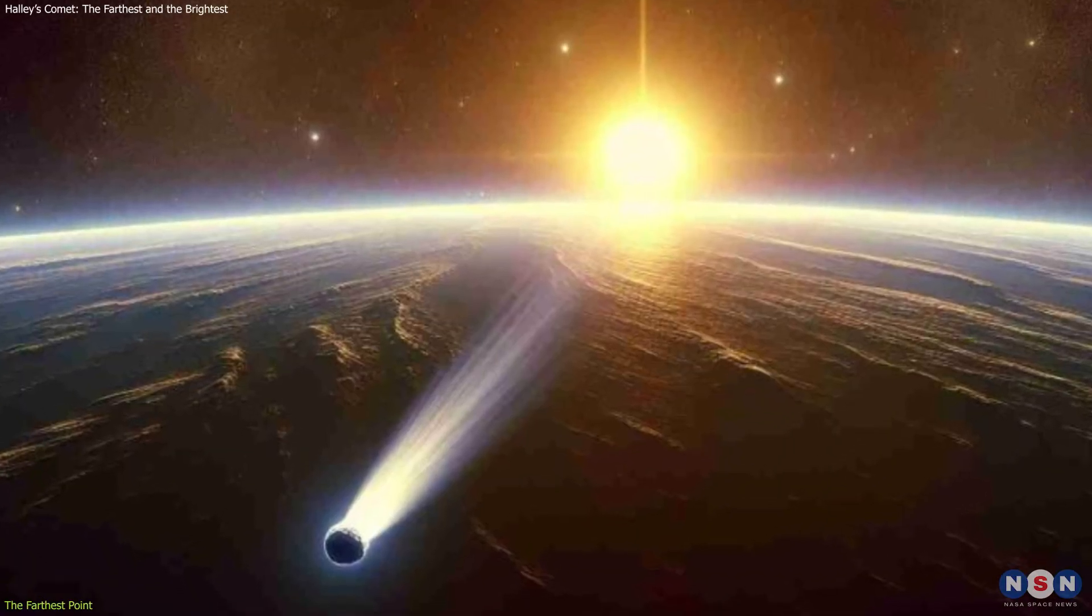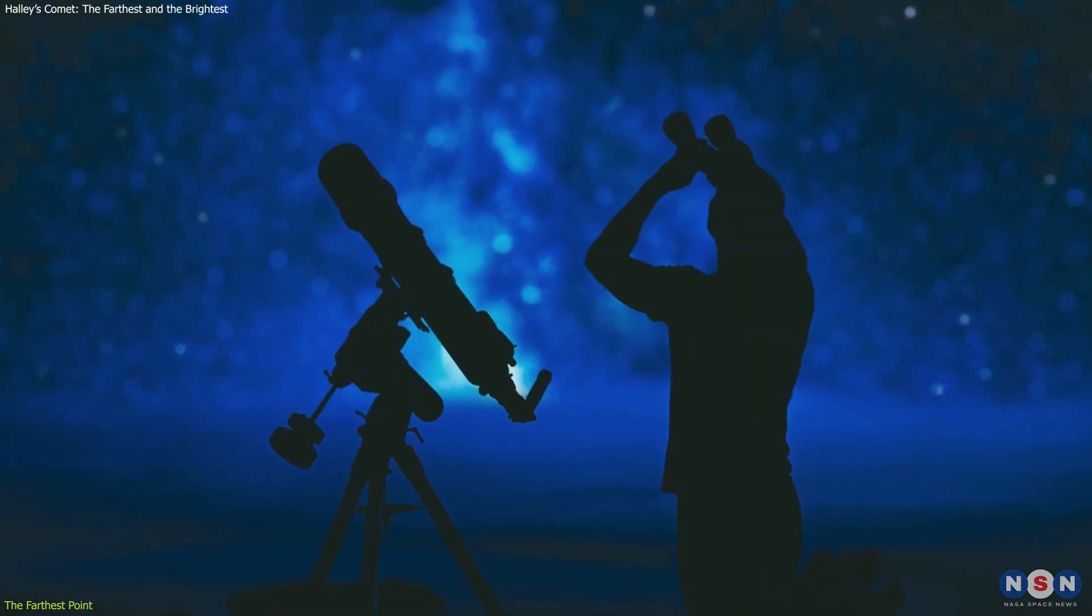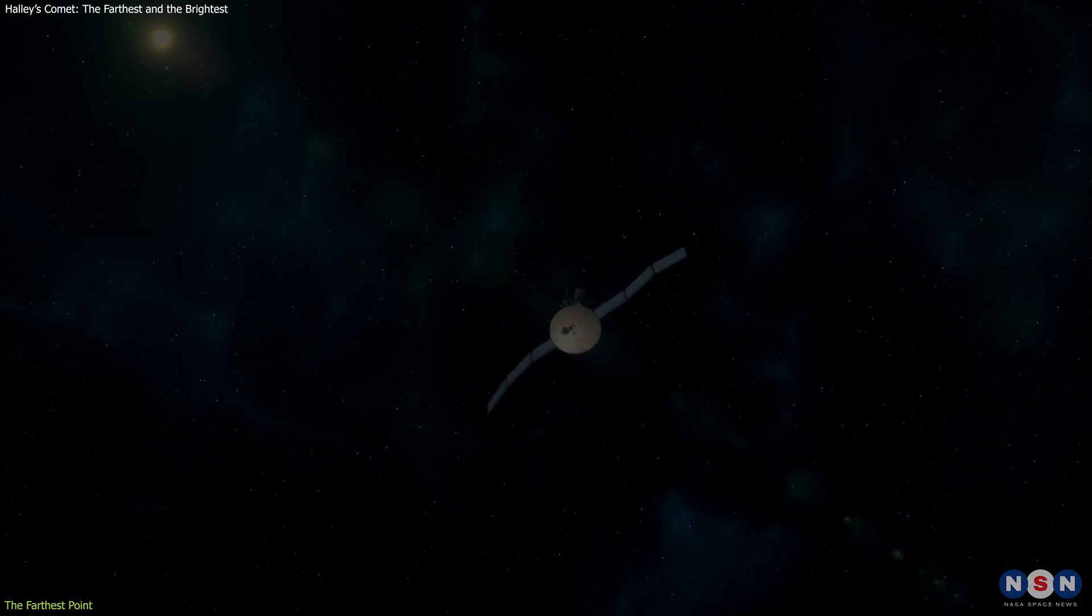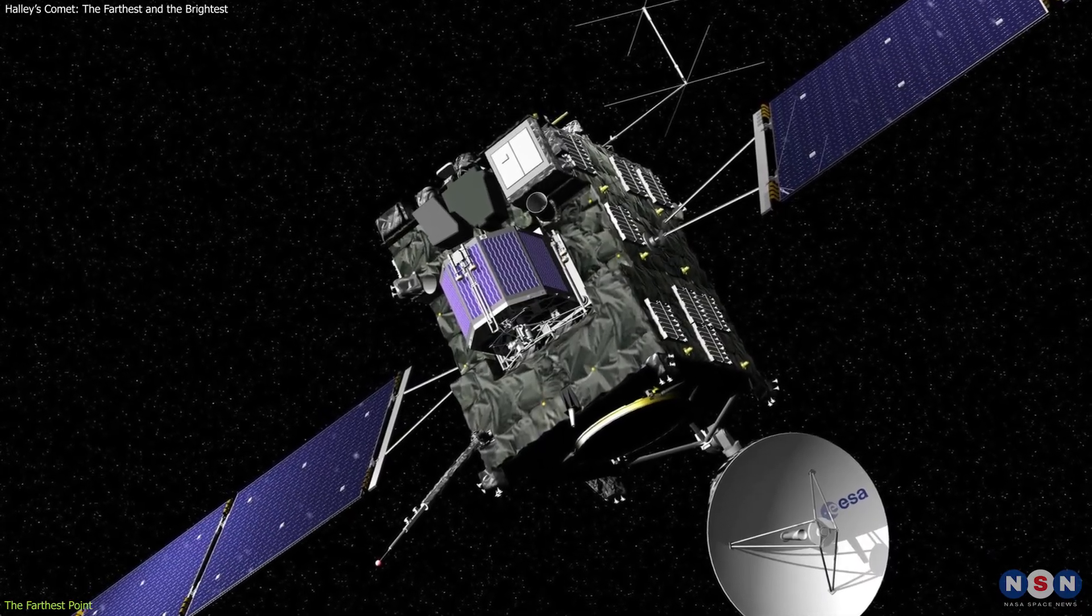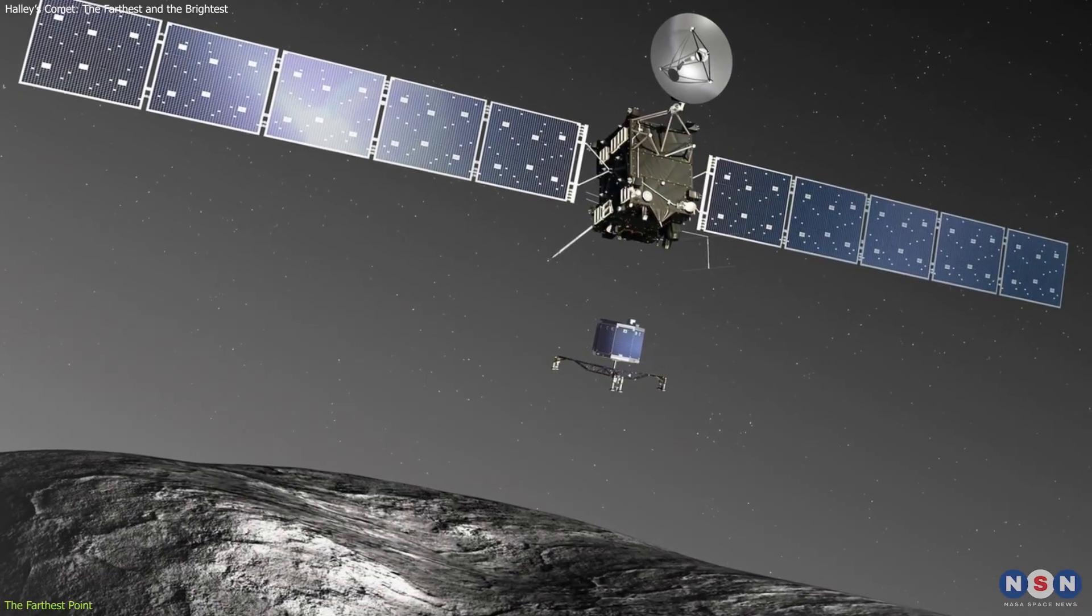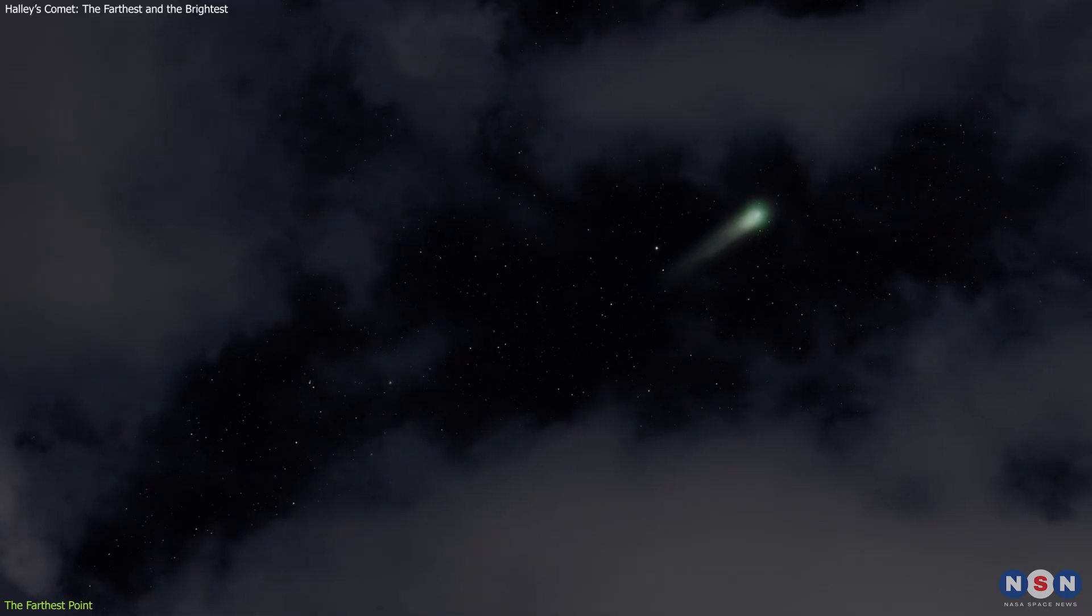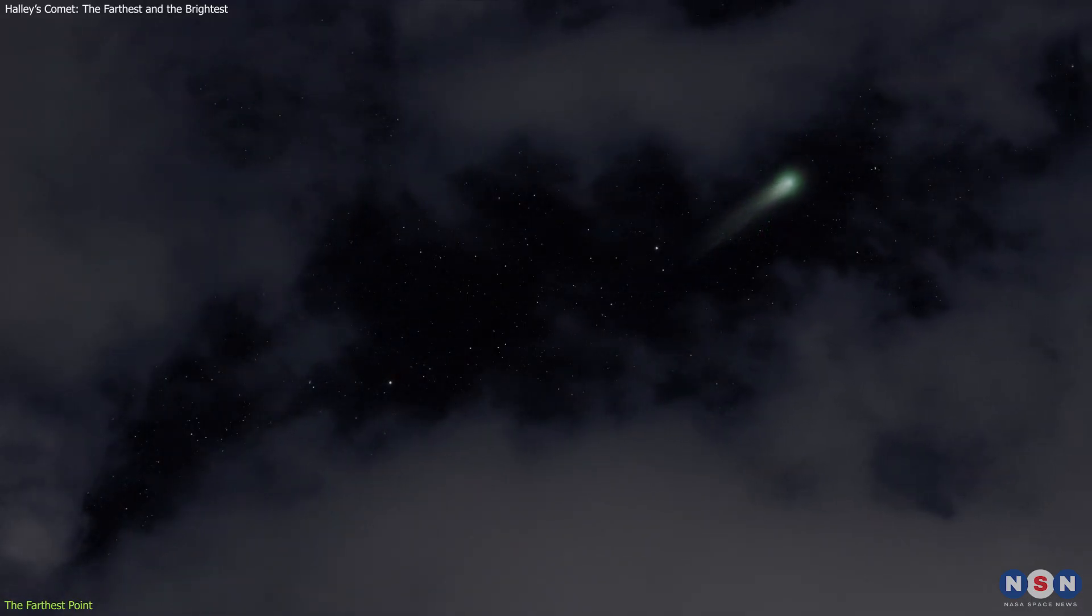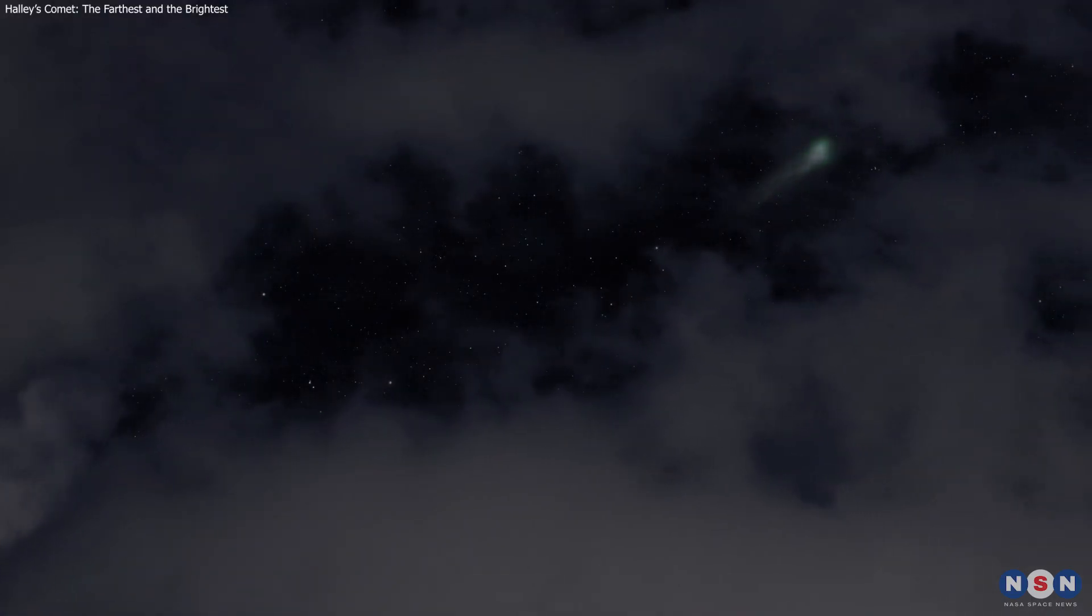Unfortunately, the comet is too far and too dim to be seen with the naked eye, or even with a telescope, from Earth. The only way to see it at its aphelion is with a powerful space probe, such as the European Space Agency's Rosetta, which visited another comet in 2014. But even if we can't see it, we can still appreciate the fact that the comet is out there, in the dark and cold depths of space, waiting for its next encounter with the sun and Earth.